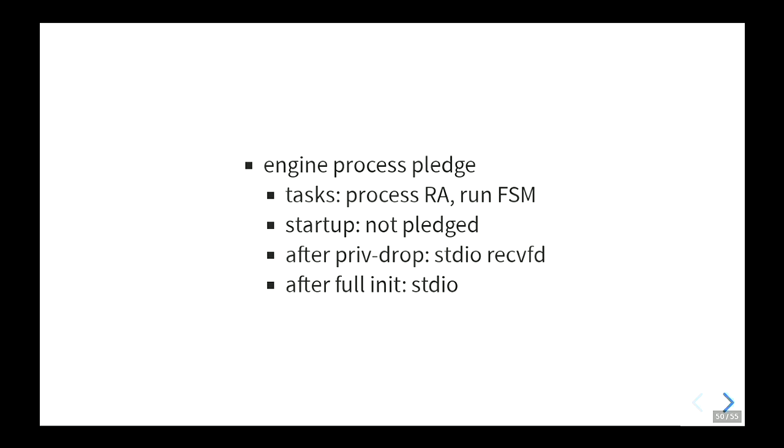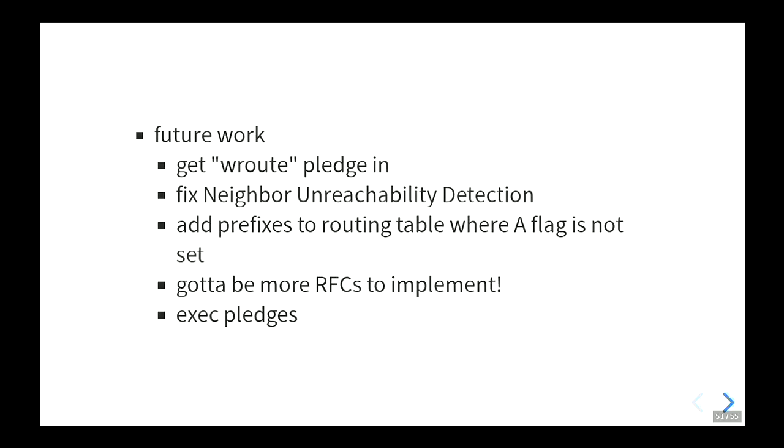The engine process is really easy — it's just standard IO and only that. It needs recvfd before pledging because the message socket gets passed in. Future work: we need to get the wroute patch in for changing the routing table and configuring addresses. Technically, the main process is currently not pledged in what's committed to base, but I'm developing this with a local kernel patch, and once the three-liner is committed in the kernel, the main process will also be pledged.